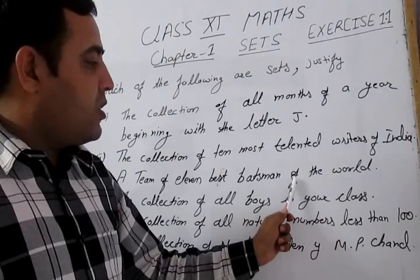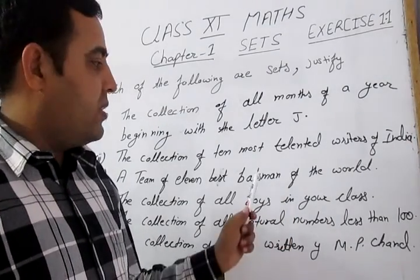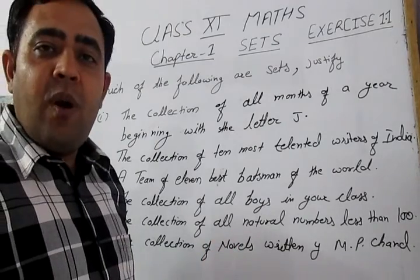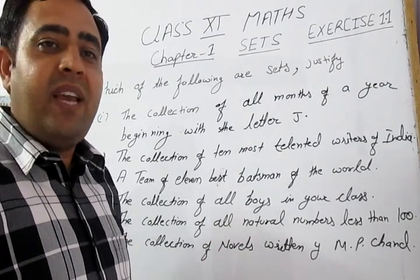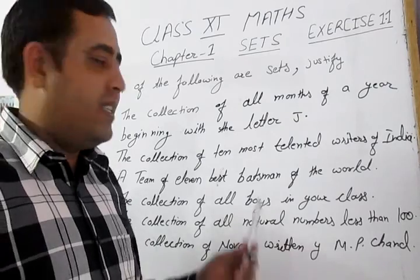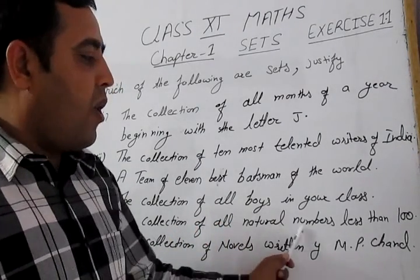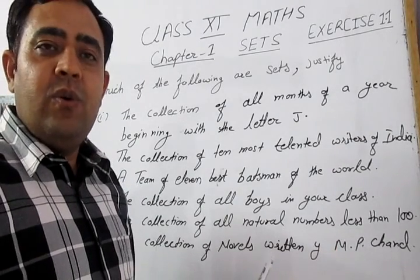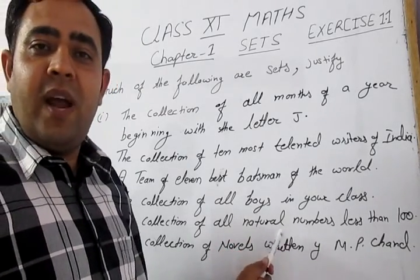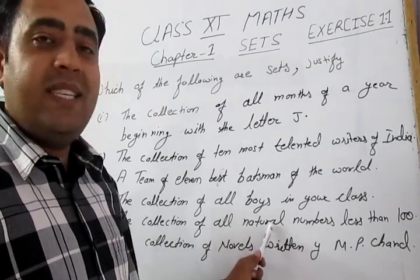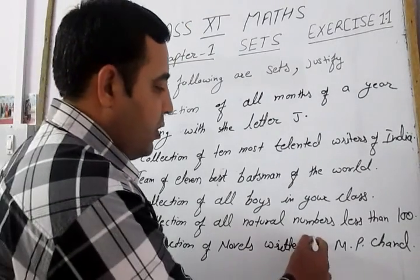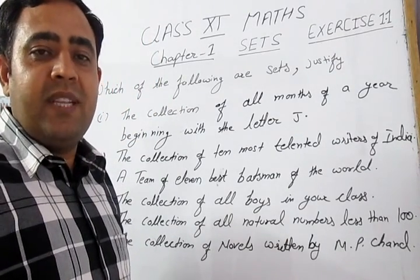Since it is not possible to select the 11 best batsmen, it is not a set. Fourth: the collection of all boys in a classroom — it is clearly defined, we can separate the boys from the girls, therefore it is a set. Fifth: the collection of all natural numbers less than 100 — natural numbers start from 1, so we can write them from 1 to 99, therefore it is a set. Sixth: the collection of novels written by Munshi Premchand — yes, it is also a set, as we can find all novels written by him.